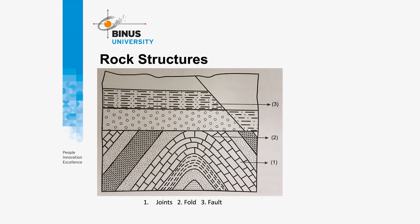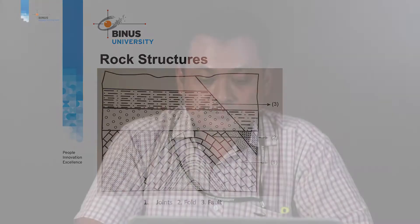Structural features — rock structures. There are three major structures in rock: the first is joints, the second is faults, and the third is folds.